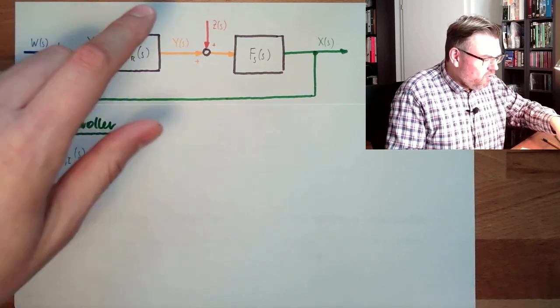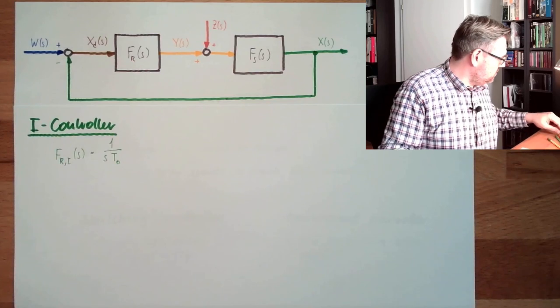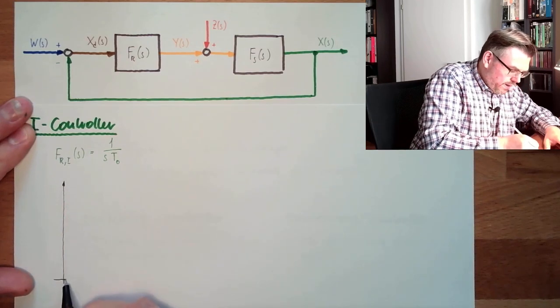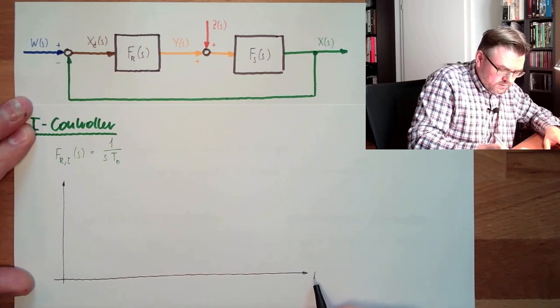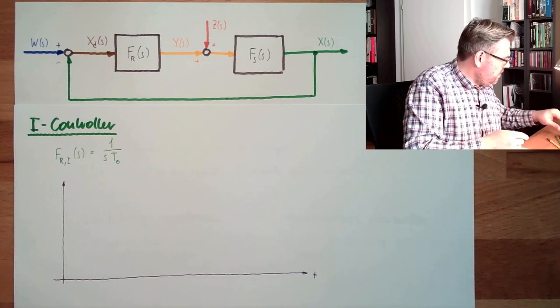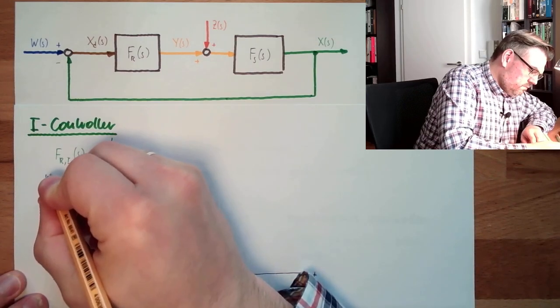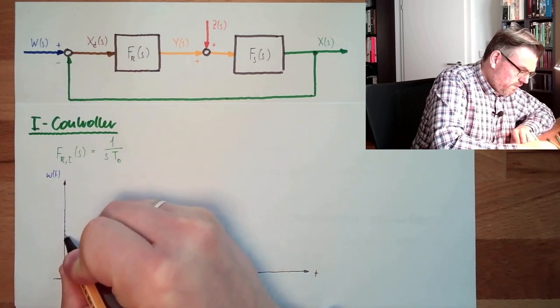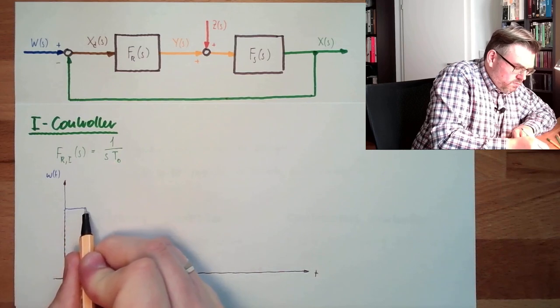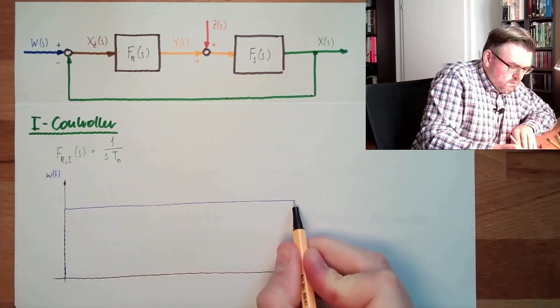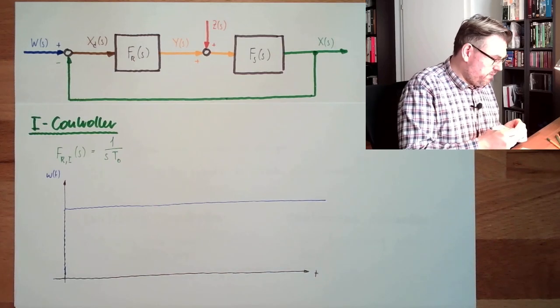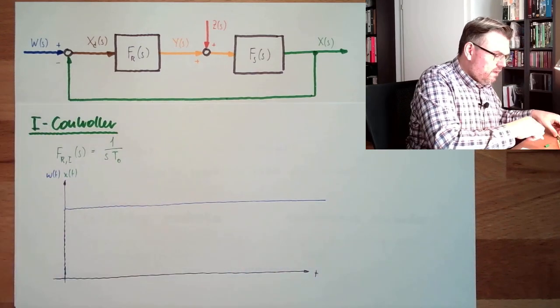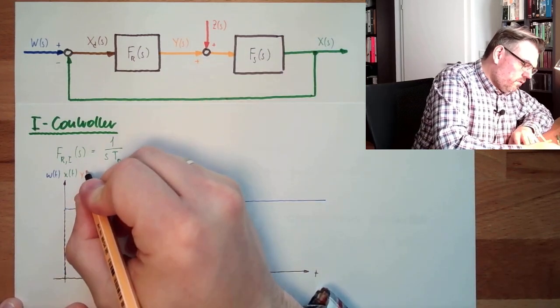Now let's think about how an I-Controller would react here. Let's draw again the different values. Here's the time T, and here let's say we have our W. And let's say our W is changing here, so we make a step in our W. This would be W, the reference variable. Then we have the controlled variable X, and of course we have again the correcting variable Y from T.